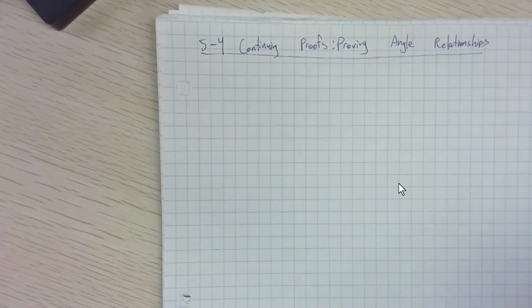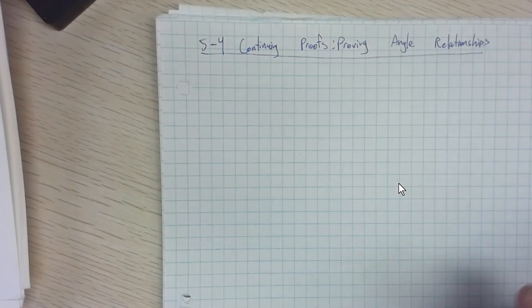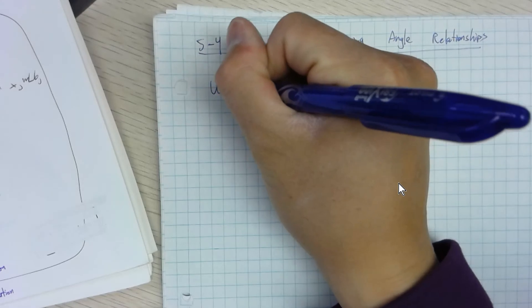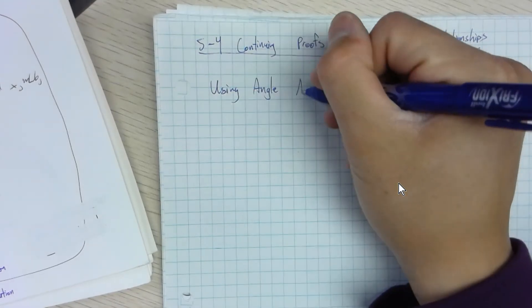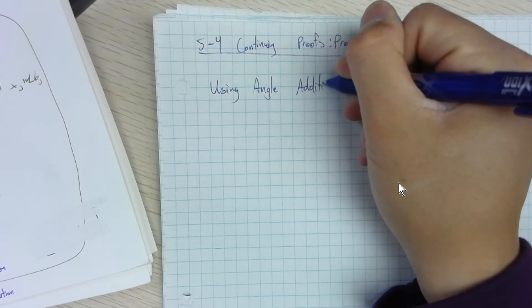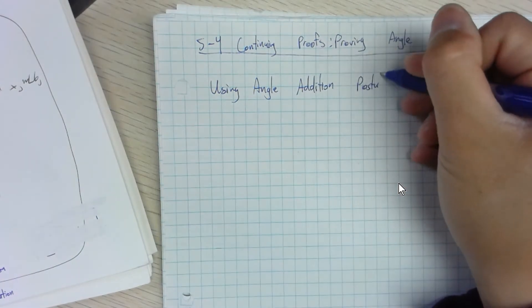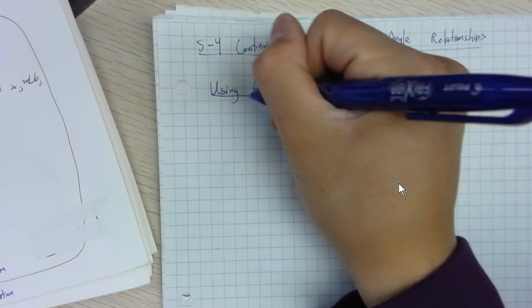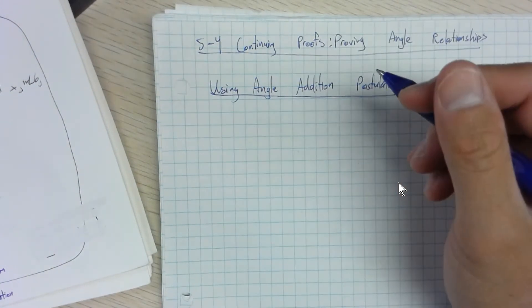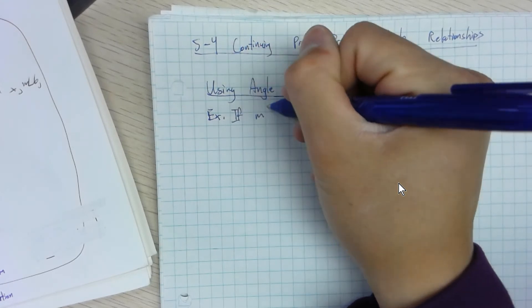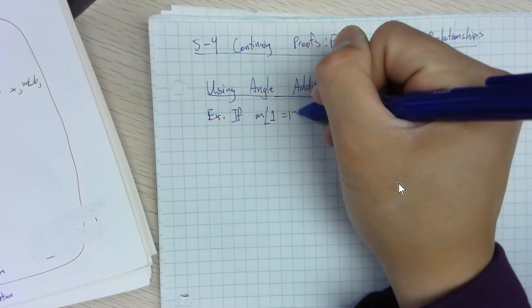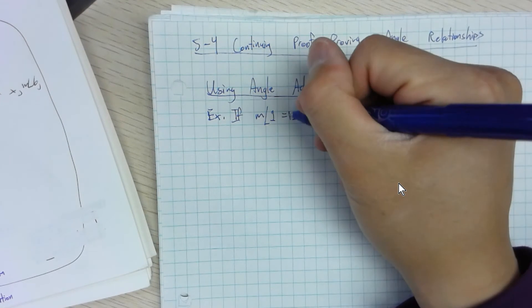After going over those theorems, we're going to actually use them in the upcoming proofs. Here's the first proof, using the angle addition postulate. If the measure of angle one equals 23, and the measure of angle ABC equals 131, find the measure of angle three.